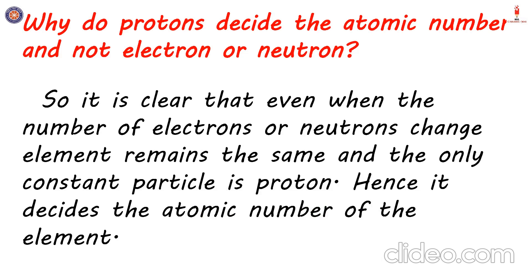Protons, on the other hand, are very heavy and present right at the center of the atom — the nucleus. It is very difficult to add or remove a proton from an atom. In fact, adding or removing a proton — that is, changing the number of protons in an atom — changes what element the atom is of. Hence it is clear that even when the number of electrons and neutrons change, the element remains the same, but if the number of protons is changed, then the element changes. Hence, the number of protons present in an atom decides what element it is, and the number of protons is the atomic number of an element.